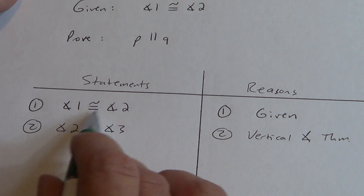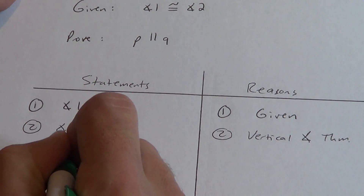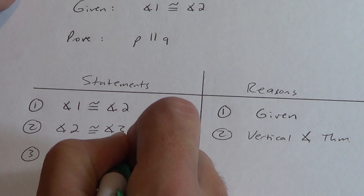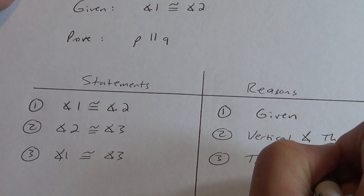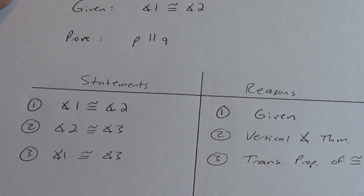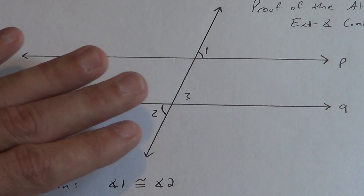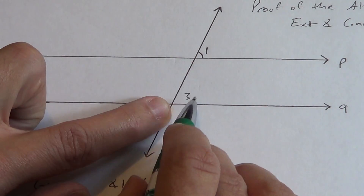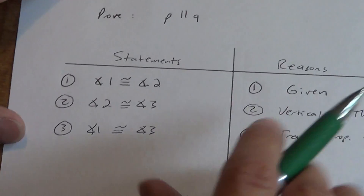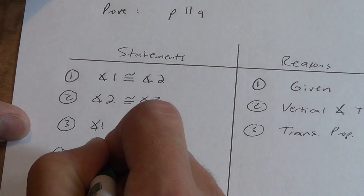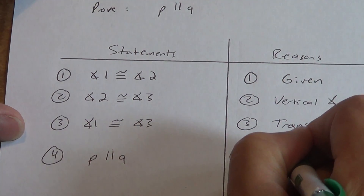We notice that angle 2 is repeated, so we can skip it. That whole idea of skipping the thing in the middle is called the transitive property — since we're talking about congruence, it's the transitive property of congruence. Now let's look back at the picture at angles 1 and 3: top right and top right, they're in the same position. Same position means corresponding angles. So yes, the lines have to be parallel because of the corresponding angle converse postulate.